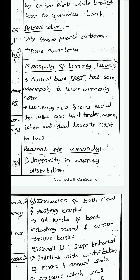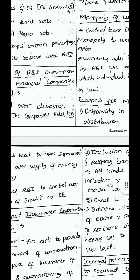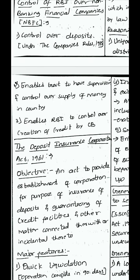The next important concept is monopoly of currency issue. In India, the central bank alone has the authority to issue currency — this is called monopoly of currency issue. Only RBI has the sole power to issue currency, and any currency notes and coins issued by RBI are legal tender money — money which any person in the country is bound to accept by law. The reasons for this monopoly are: uniformity in money distribution, enabling the government to supervise and control the supply of money, and enabling RBI to control the creation of credit by commercial banks.